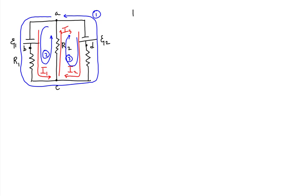For our second independent loop, we are going to choose loop 2. This means we're going to ignore loop 3, since loop 3 can be expressed in terms of loops 1 and 2.